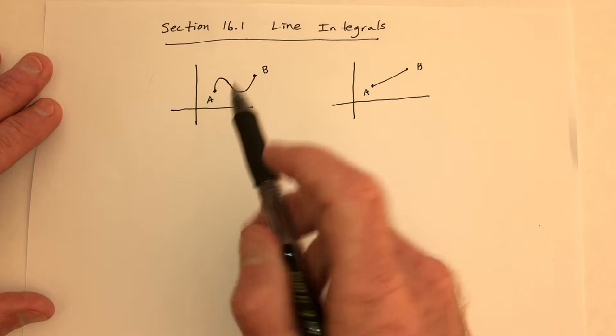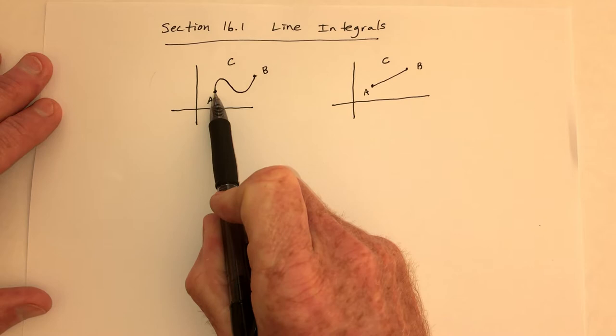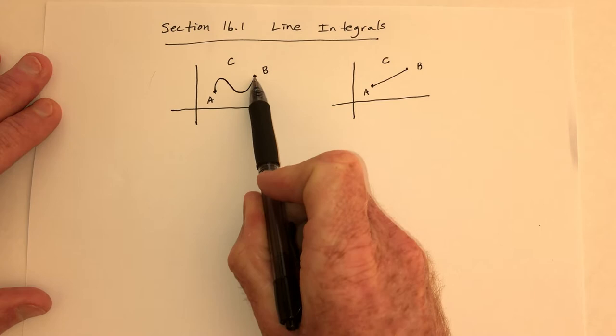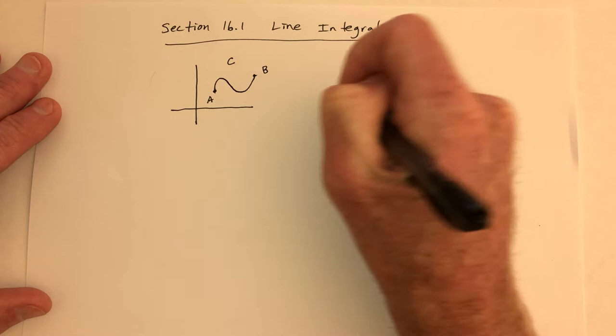So even though these are called line integrals, you might go along some curve called curve C, or the curve could be a straight line. For example, if you're carrying a heavy backpack and want to know how much work it takes to hike up a mountain and down a valley to reach a point, it's going to take more work than just going in a straight line. But there are situations where you can use a straight line.